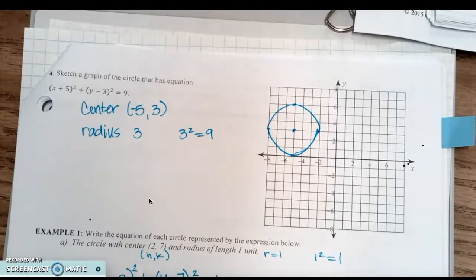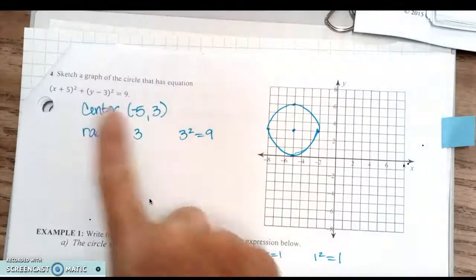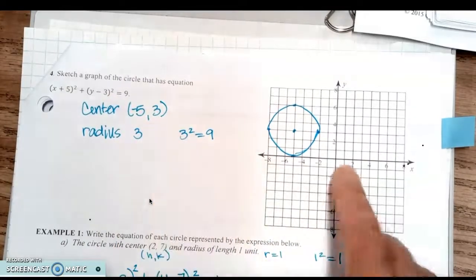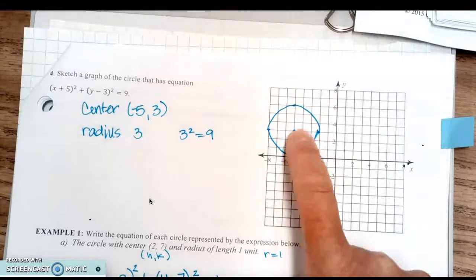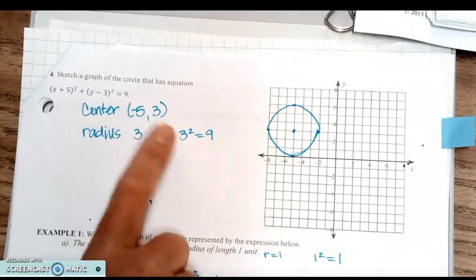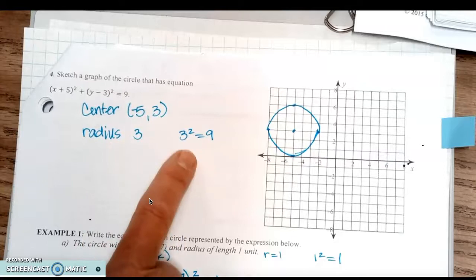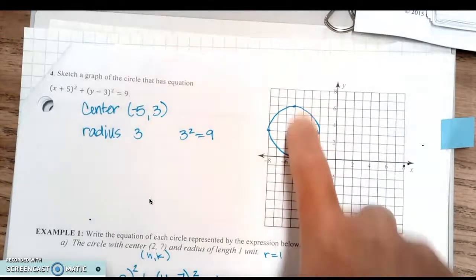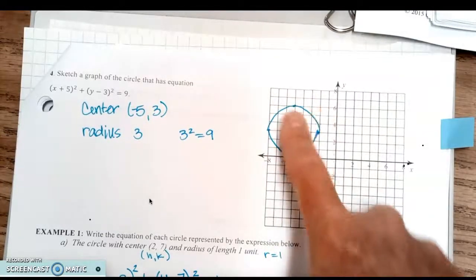Flip to the top of page 20. Sketch a graph of the circle with equation (x + 5)² + (y - 3)² = 9. Take the numbers and find their opposites to get the center: the opposite of positive 5 is -5, the opposite of -3 is positive 3. So count 5 left and 3 up for your center. The radius is 3, because 3² = 9. From that center, go 3 units each direction and draw a smooth circle.